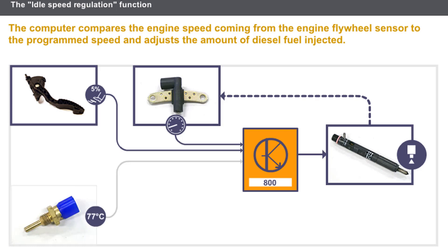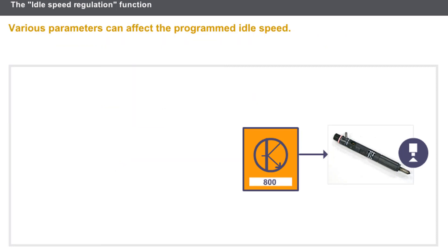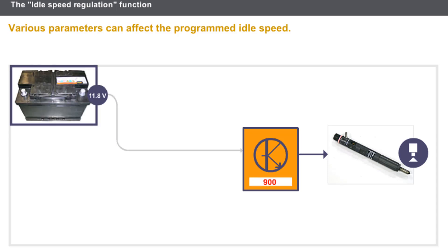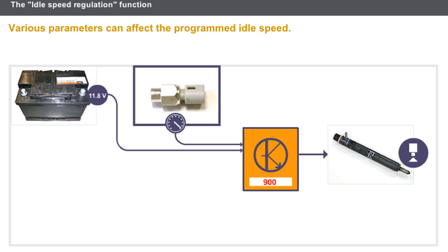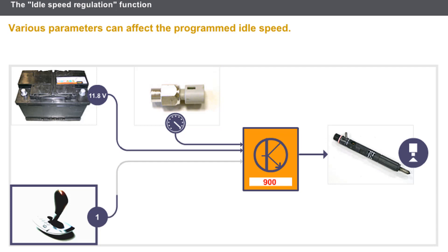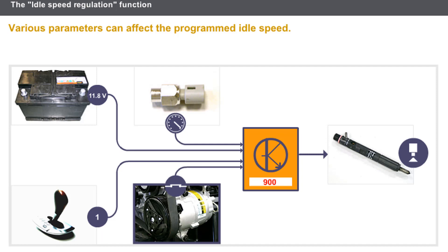The coolant temperature affects the programmed speed — idle speed is increased when the engine is cold. Other parameters may also affect the programmed idle speed. On certain systems, if the battery voltage is low, the idle speed is raised to increase alternator charge. Idle speed is also increased to prevent stalling during high power-assisted steering pressure, engagement of a gear on an automatic transmission, or air conditioning compressor activation.